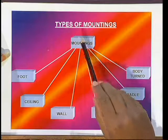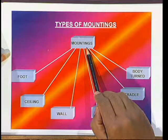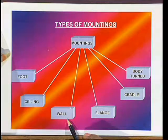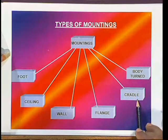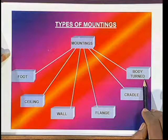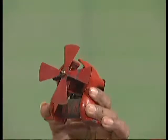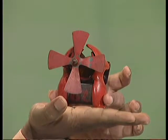Now let us go to the next mechanical feature: mounting. Types of mounting — mountings are classified into foot mounting, ceiling mounting, wall mounting, flange mounting, cradle mounting, and body-turned mounting. In foot mounting, the motor is fixed on a platform. If the motor is fixed to the wall with the shaft vertically up or down, it is called wall mounting.